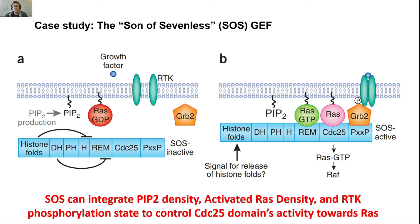We went from having just a CDC25 domain to a molecule that now controls how much of that CDC25 activity is allowed to exist under different conditions inside the cell. This is a general theme you'll see for many of the GEFs as well as GAPs and signaling molecules in general. I'm not asking you to memorize that SOS responds to PIP2 and GRB2, but rather to get you thinking about how a core catalytic activity can be regulated by these accessory modules.